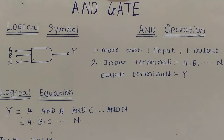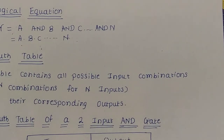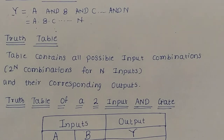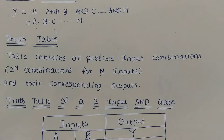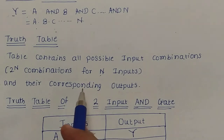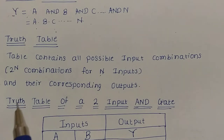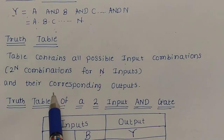Now we will see the truth table of the AND gate. First, what is meant by a truth table? Since a logical or binary variable can have only two possible values, 0 or 1, any logical operation can be defined in the form of a table containing all possible input combinations — that means 2 raised to n combinations for n inputs — and their corresponding outputs. This table is known as the truth table.